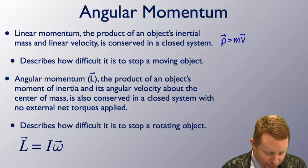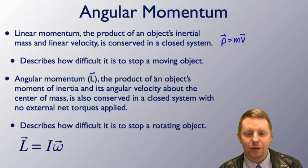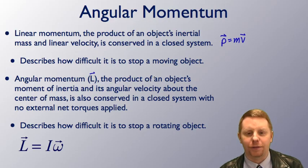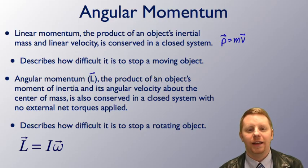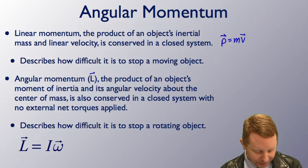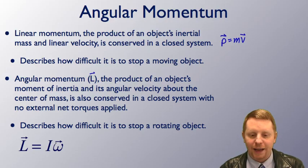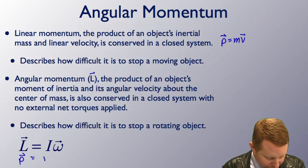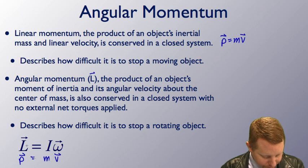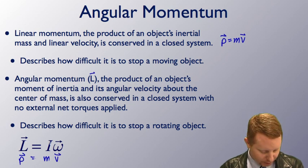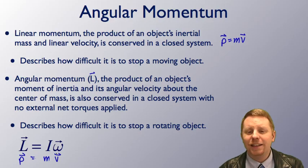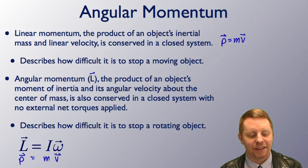Angular momentum, capital L, also a vector, is the product of an object's moment of inertia and its angular velocity about the center of mass. It's also conserved in a closed system when you have no net external torques applied. Angular momentum equals moment of inertia times angular velocity — compare this to linear momentum: rotational inertia maps to mass, and angular velocity maps to translational velocity. Angular momentum is really just looking at the rotational side of the same basic concept.